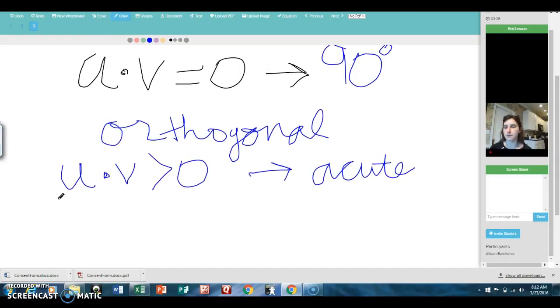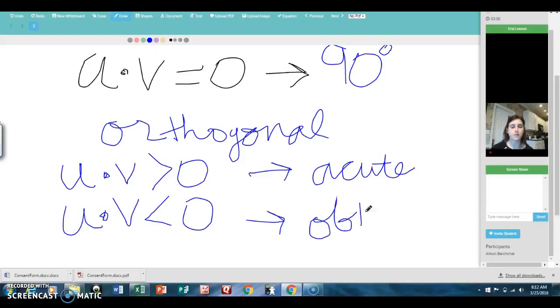And then finally, if the dot product u dot v is negative, then that means we've created an angle that is in the second quadrant because we're talking about arc cosine. So in that case we have an obtuse angle. So we can figure out the nature of the angle between the two vectors by looking at the sign of the dot product.